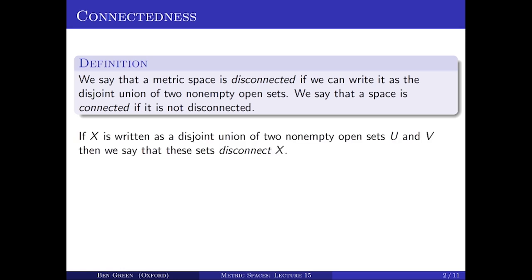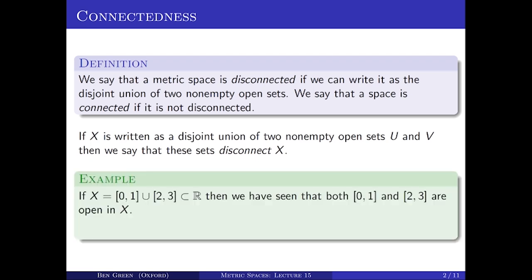If you can disconnect X — if you write it as a disjoint union of two non-empty sets U and V — then we say that those two sets disconnect X. So let's give a little example of a disconnected set.